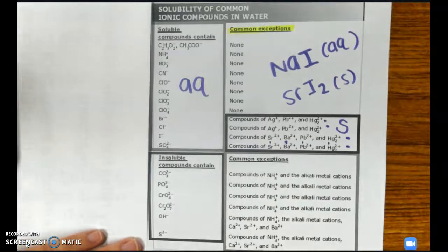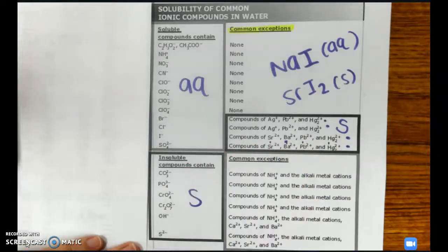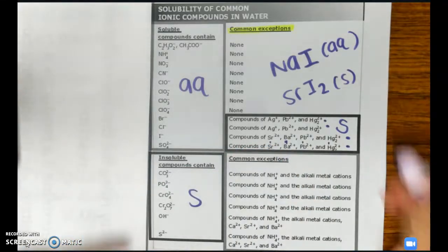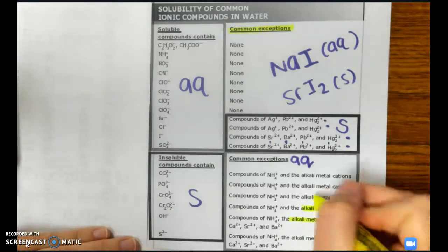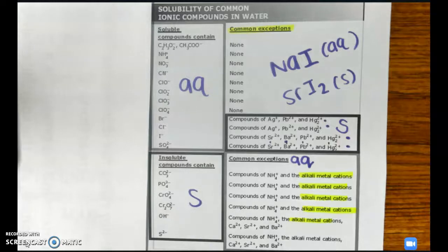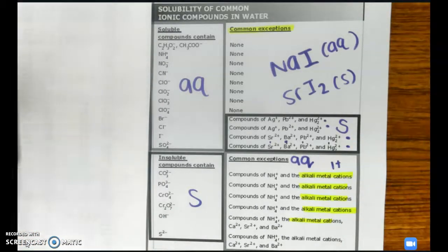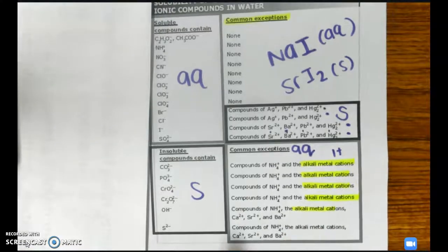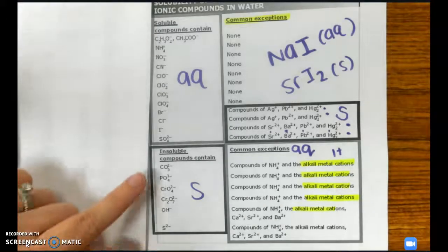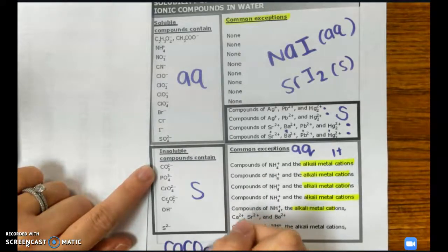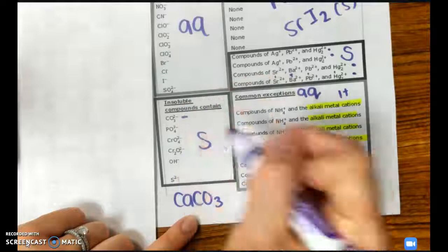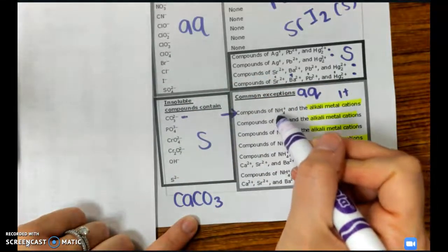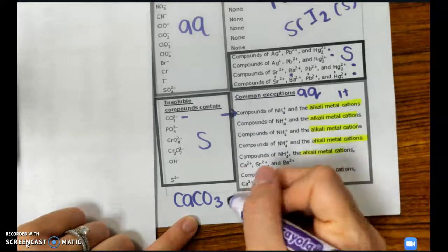At the bottom of the chart are insoluble compounds, which are normally solid or precipitates — unless they are paired with one of their exceptions, in which case they are aqueous. The exceptions are always ammonium and all alkali metals, which is group 1: hydrogen, lithium, sodium, potassium, etc., and a few others. For example, carbonate is normally solid. Calcium carbonate, CaCO3 — calcium is not an alkali metal and not an exception, so it is solid.